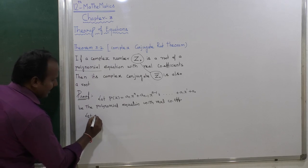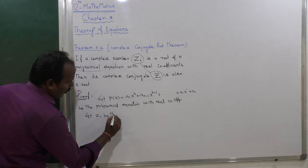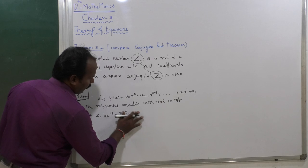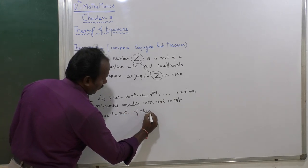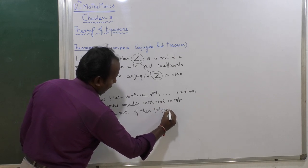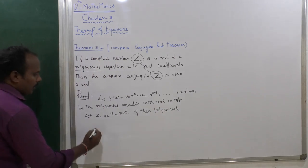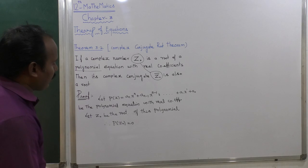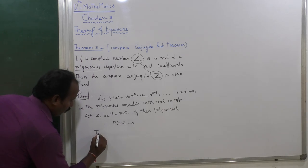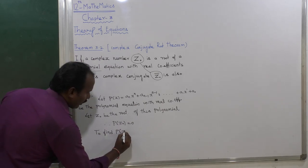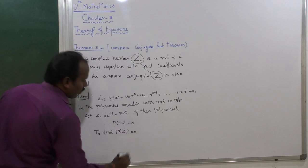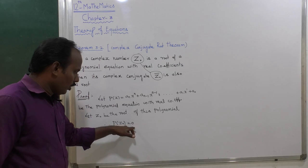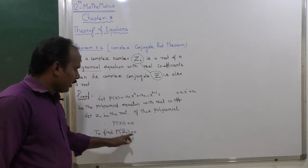Next, let us declare the value of z. Let z₀ be a root of this polynomial. Therefore p of z₀ is equal to 0. Our aim or goal is to prove that p of z₀-bar is also equal to 0.